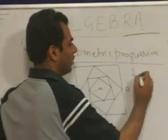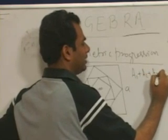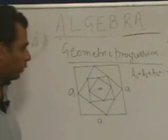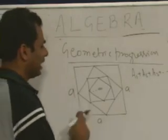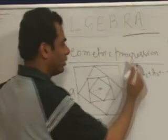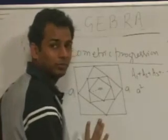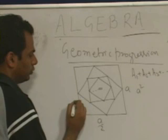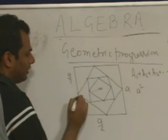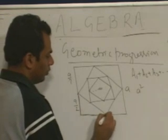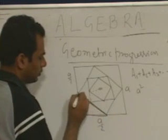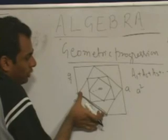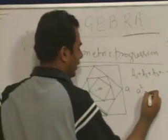Let a₁ represent the area of the biggest square, a₂ the area of the second square, a₃ the area of the third square, and so on till infinity. The area of the first square is a². Since each vertex is a midpoint, each half-side is a/2, so the side of the inner square is a/√2, making its area a²/2.